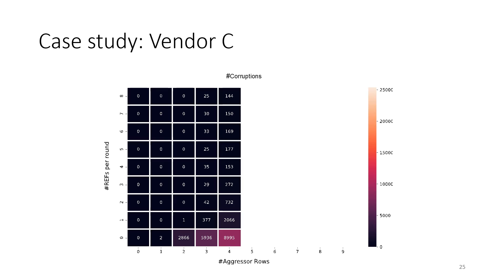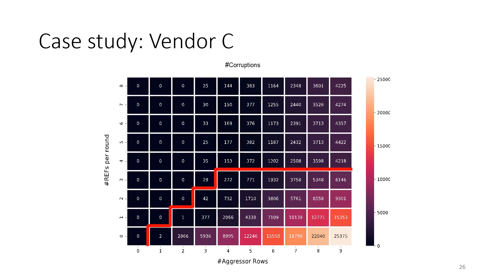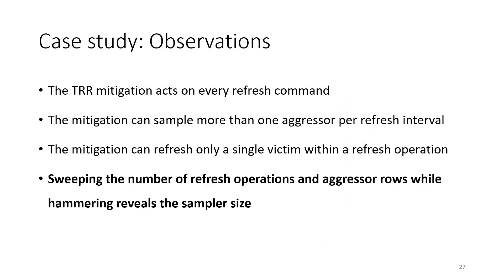To recover the sampler size, we performed the same experiment for different numbers of aggressors N. While increasing N, we searched for the scenario where bit flips stabilize and R is less than N. When this happens, we can conclude that we have overflowed the sampler. Varying N up to 9, we noticed that starting from N equal to 4, the plateau happens when introducing 4 refresh operations. This leads us to conclude that the sampler size is 4 — meaning the sampler cannot track more than 4 rows. Sweeping the number of refresh operations and aggressor rows while hammering reveals the sampler size.